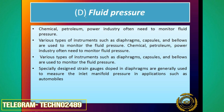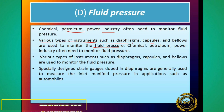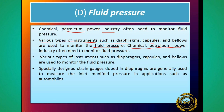Chemical, petroleum, and power industries में हमें जरूरत होती है कि fluid के pressure को measure करें। Chemical industries में, petroleum में, या power industries में pressure को monitor करना जरूरी होता है। Various types of instruments such as diaphragms, capsules, and bellows are used to monitor the fluid pressure - द्रव का दाब मापने के लिए।